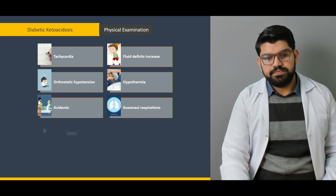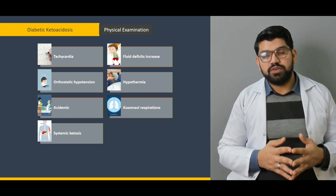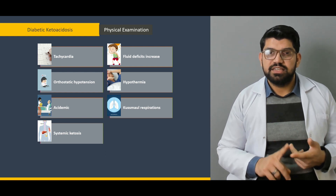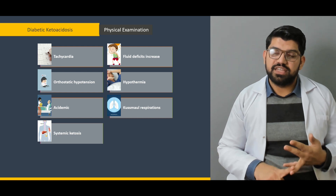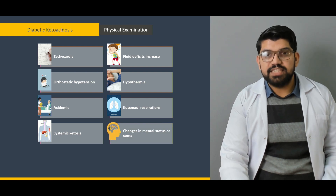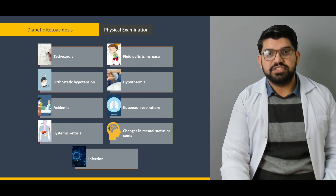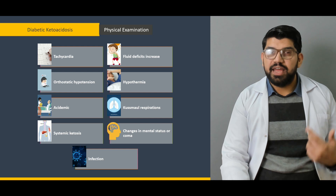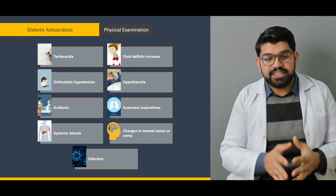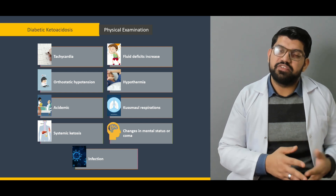Kussmaul respirations and systemic ketosis: the effect of ketone production can affect many organs — brain, heart, causing abdominal pain, affecting renal function and urine. Ketones can produce a variety of symptoms including changes in mental status or coma, altered mental status, and recurrent infections. Patients with diabetic ketoacidosis are also prone to infection. A patient may present with signs of DKA along with a history of previous infection, which is very important to identify, as infection is the most important cause for diabetic ketoacidosis after medication non-compliance.